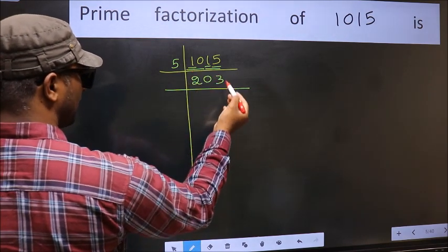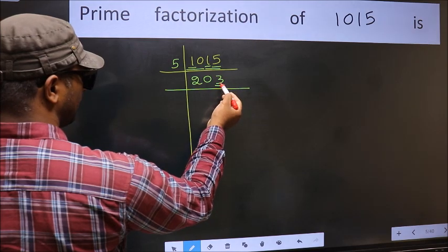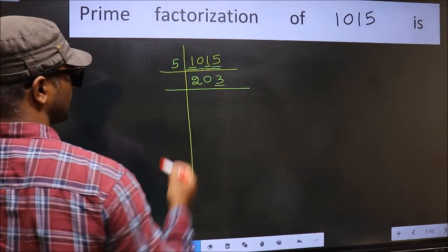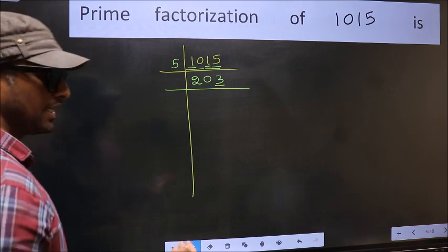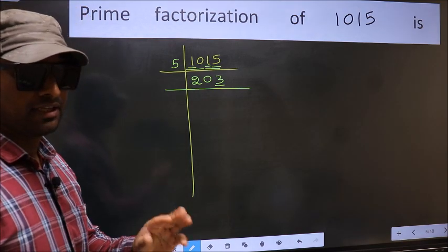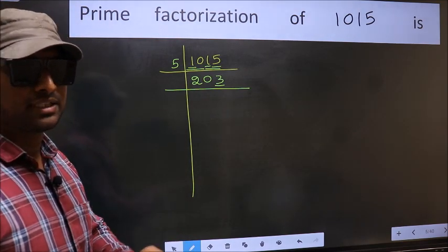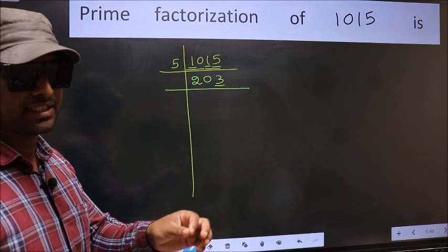Now, here we have 203, last digit 3, not even. So, this is not divisible by 2. Next, prime number 3. To check divisibility by 3, for that we should add the digits.